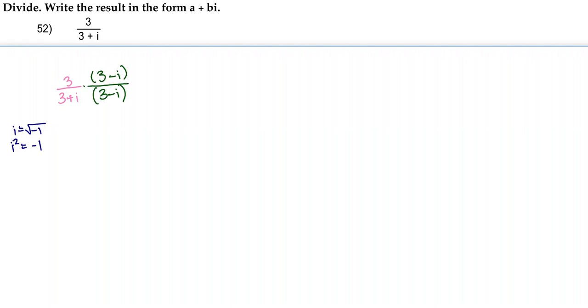So, when we multiply the numerator, we're distributing the 3 into the 3 and the negative i. So, 3 times 3 is 9 and 3 times negative i is negative 3i.